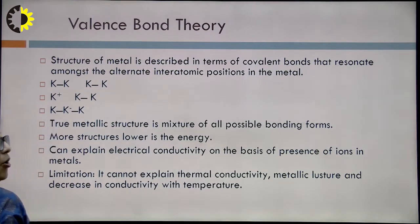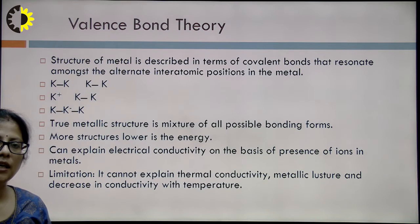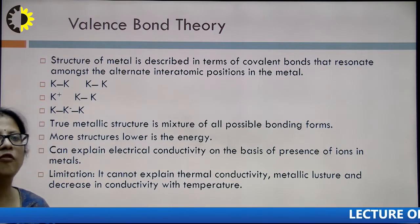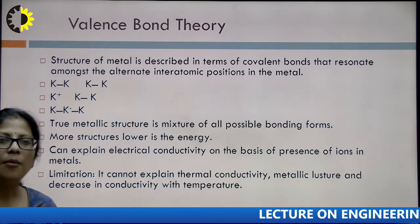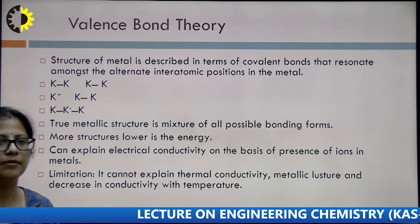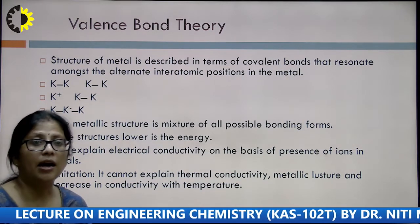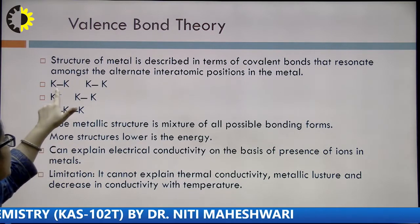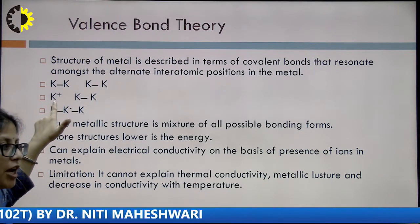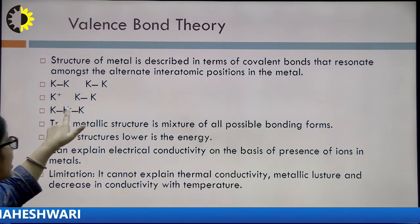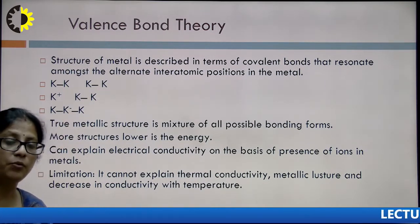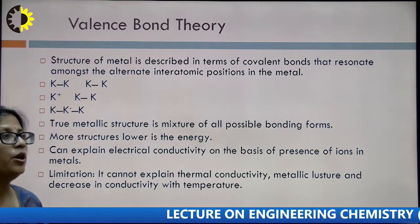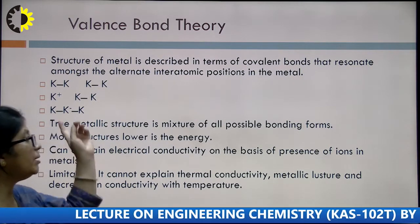The next metallic bond theory is the valence bond theory. In terms of valence bond theory, the structure of the metal is described in terms of covalent bonds that resonate amongst the alternate interatomic positions in the metal. Taking the example of potassium: K with K, there can be a positively or negatively charged potassium atom depending on bonding arrangement. The more structures there are, the lower the energy of the metal. So the true metallic structure is a mixture of all possible bonding forms.